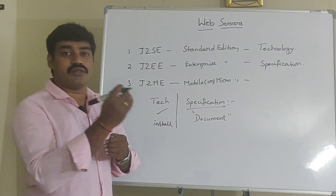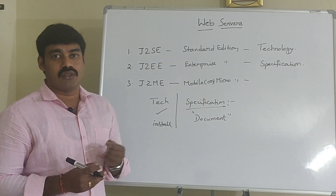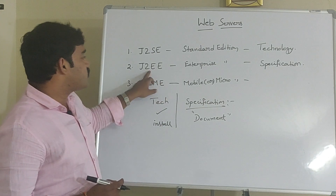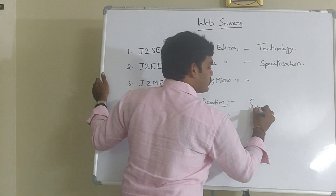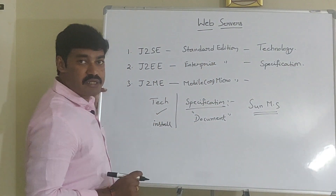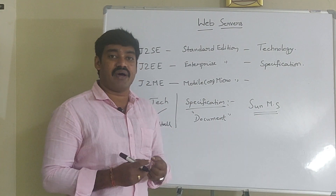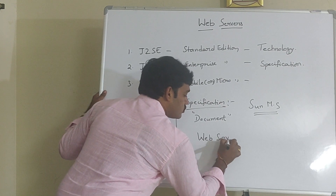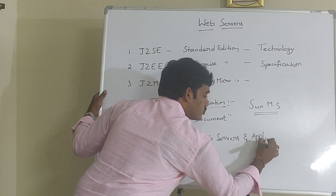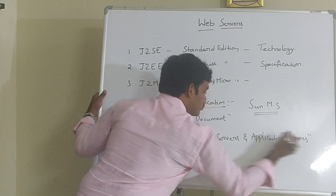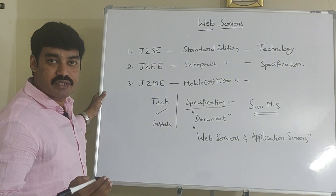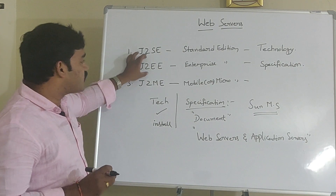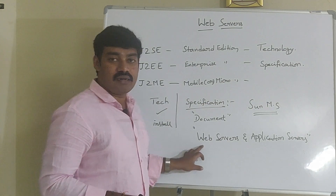Specification is a document that is released into the public market before starting the project. Different vendors take this specification and implement it in their own way. J2EE specification was given by Sun Microsystems. Because of the popularity of Sun Microsystems, different vendors implemented it in terms of web servers and application servers.